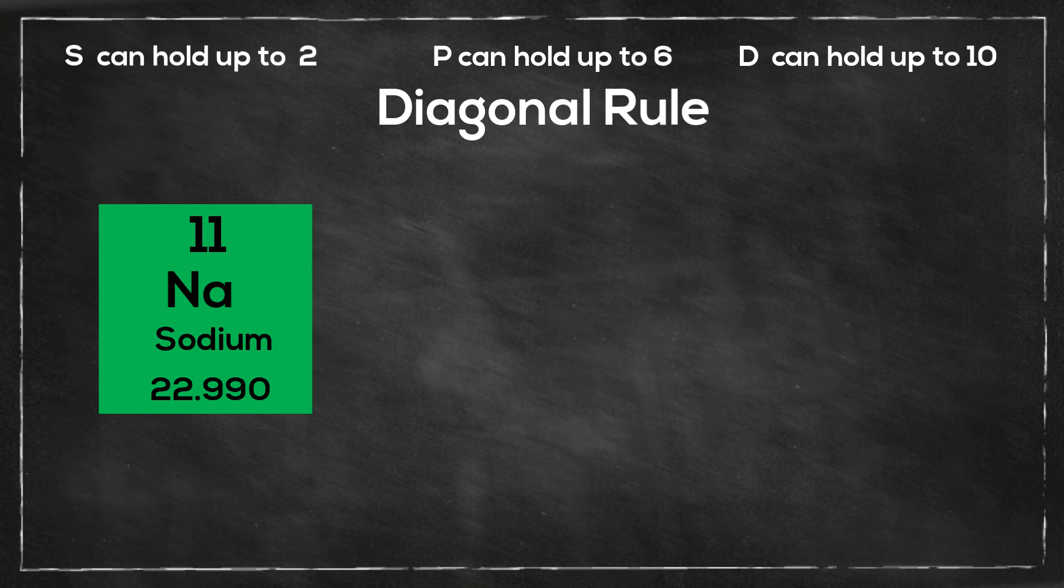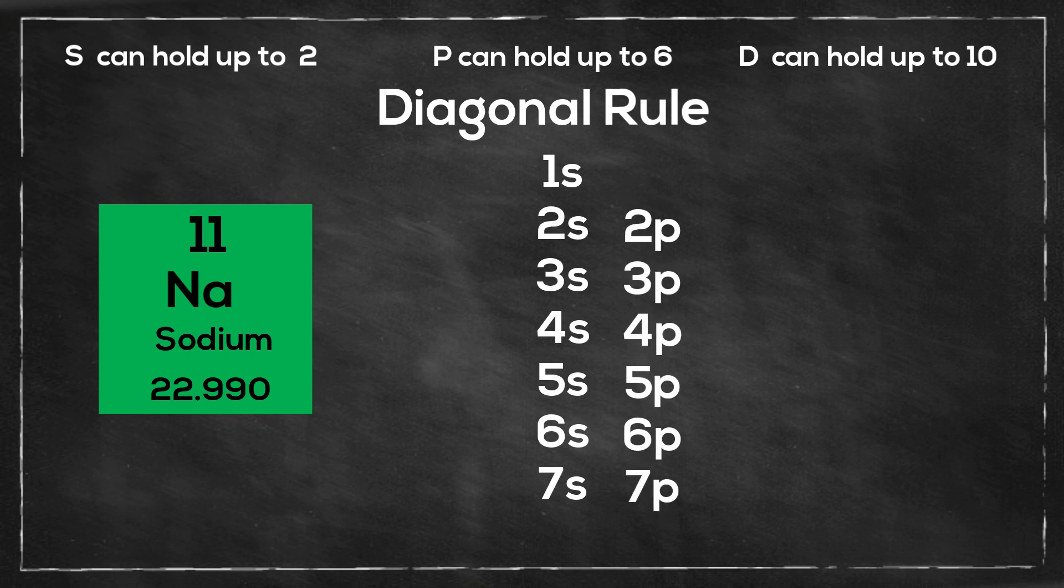Let's first set up our chart. I'll start with the s orbital, so I'll number one through seven. Then I move to the p orbitals, two through seven, then the d's, then the f's.